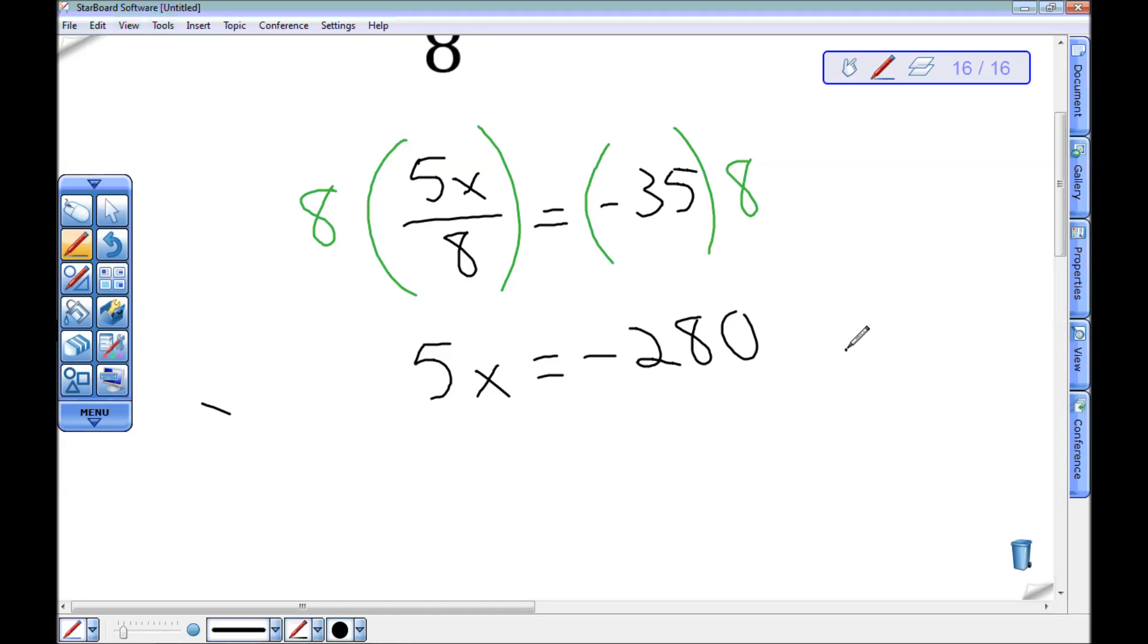And now, again, I wish this was just x, but now I have 5 times x. So I can divide that guy by 5. Again, to keep my equations equivalent, I need to divide this guy by 5.